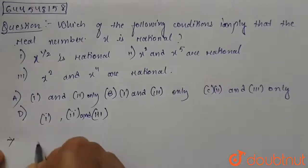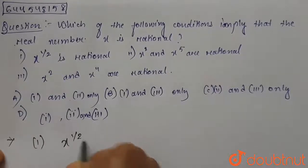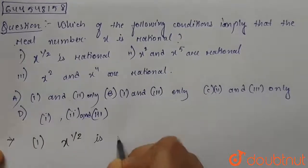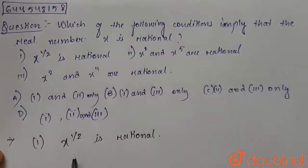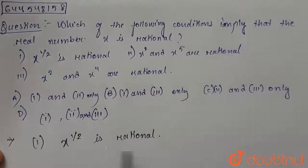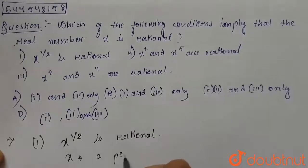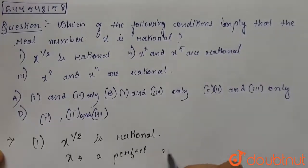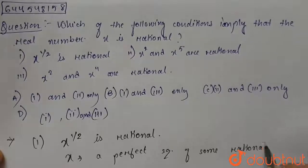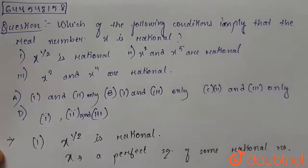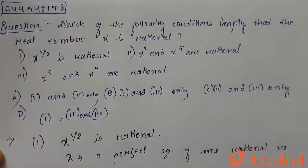The first condition we are given is x to the power half is rational. Now for x to the power half to be rational, x has to be a perfect square of some rational number. For example, if x equals 4, then x to the power half...